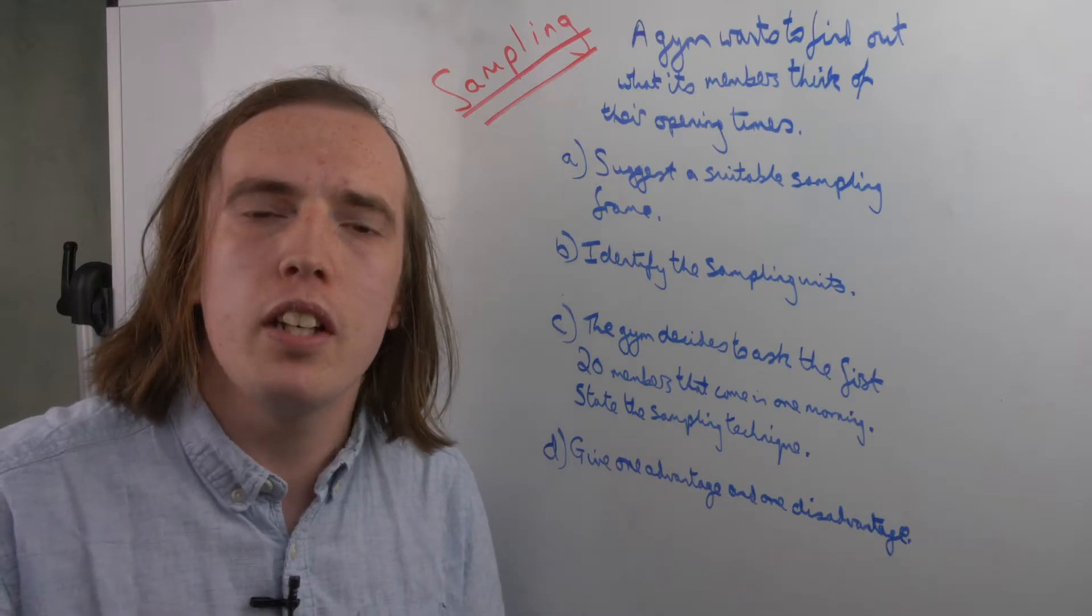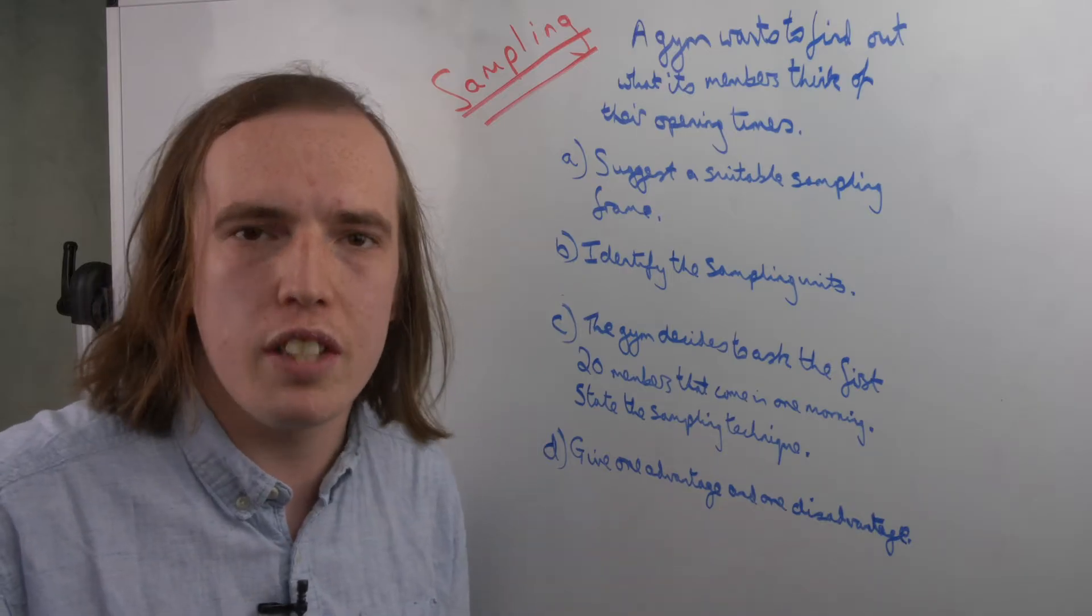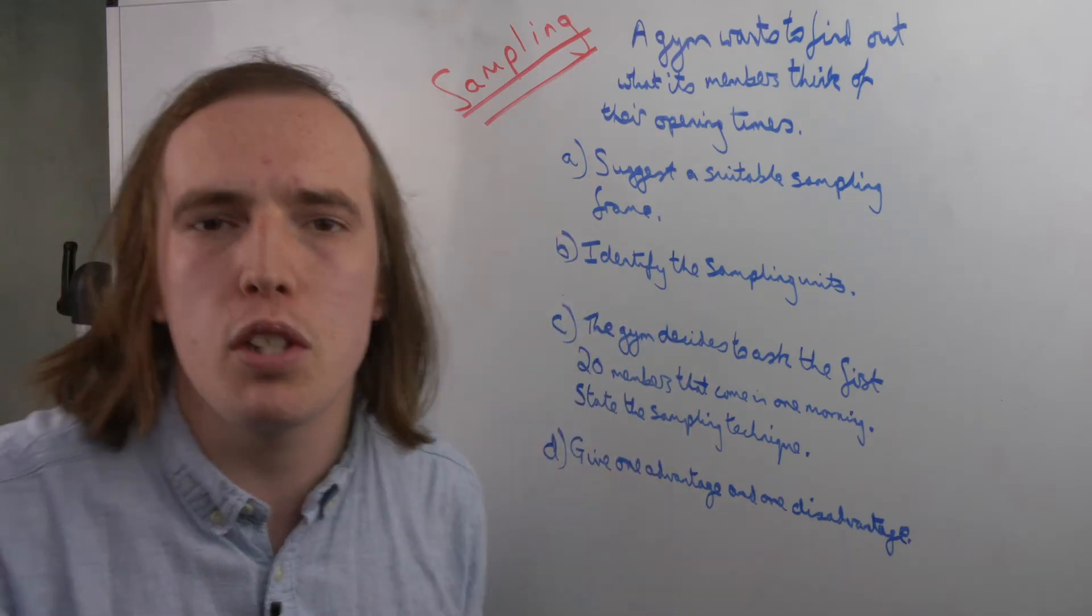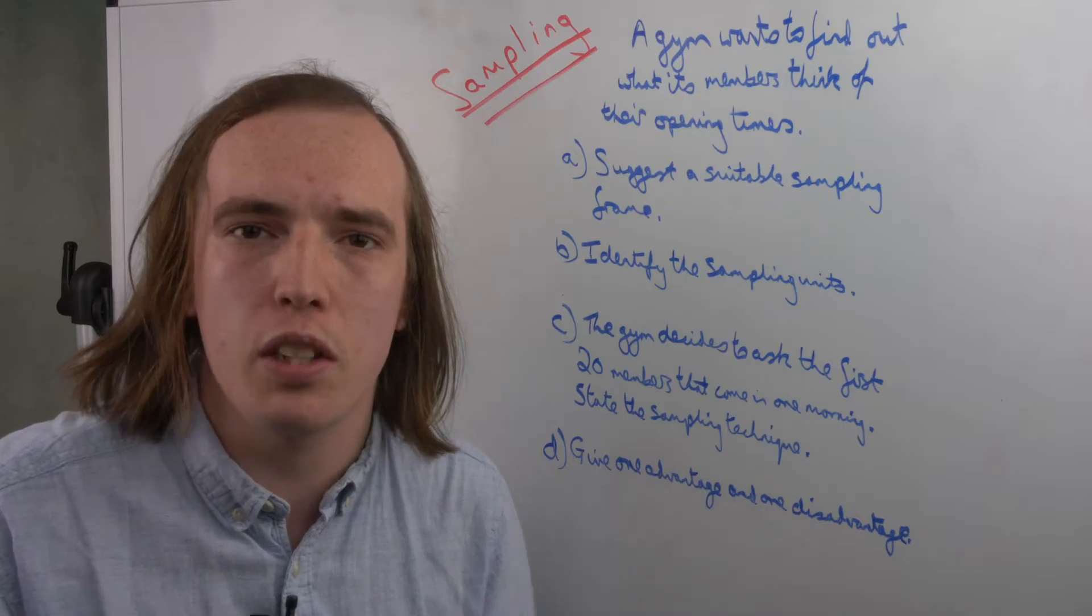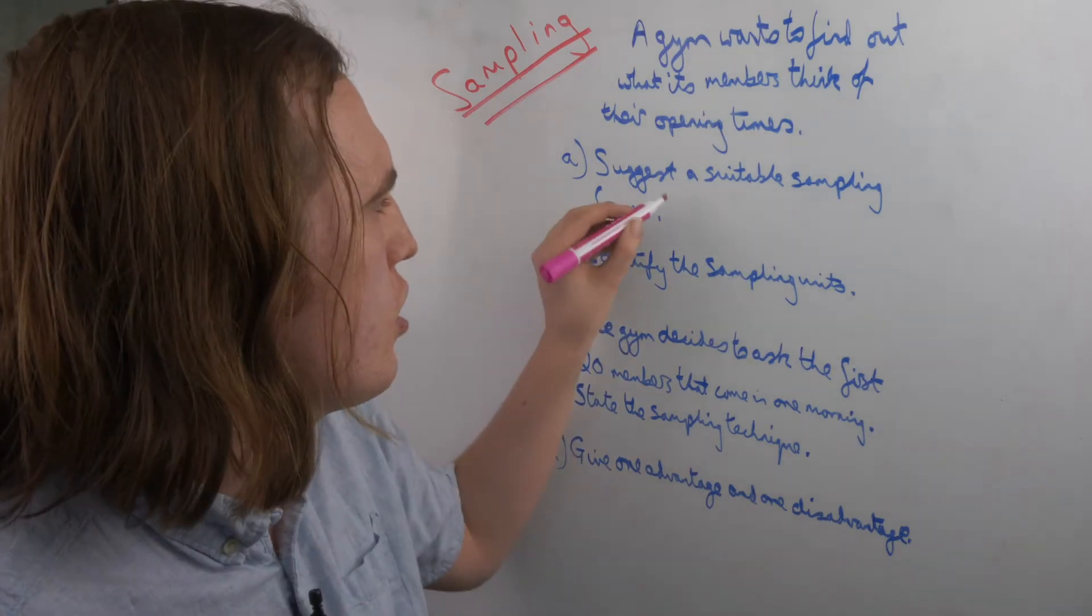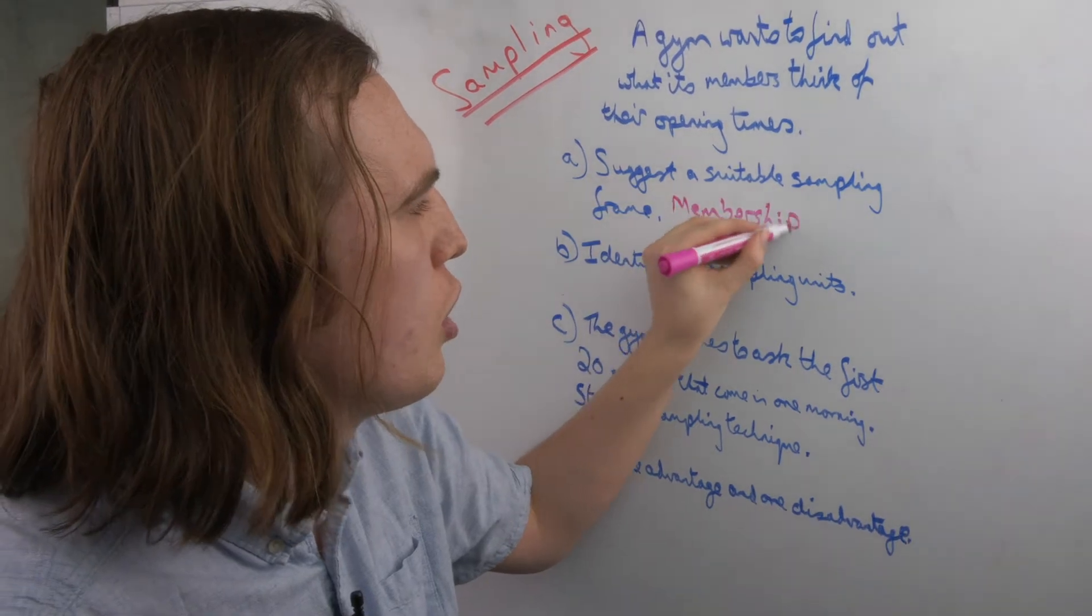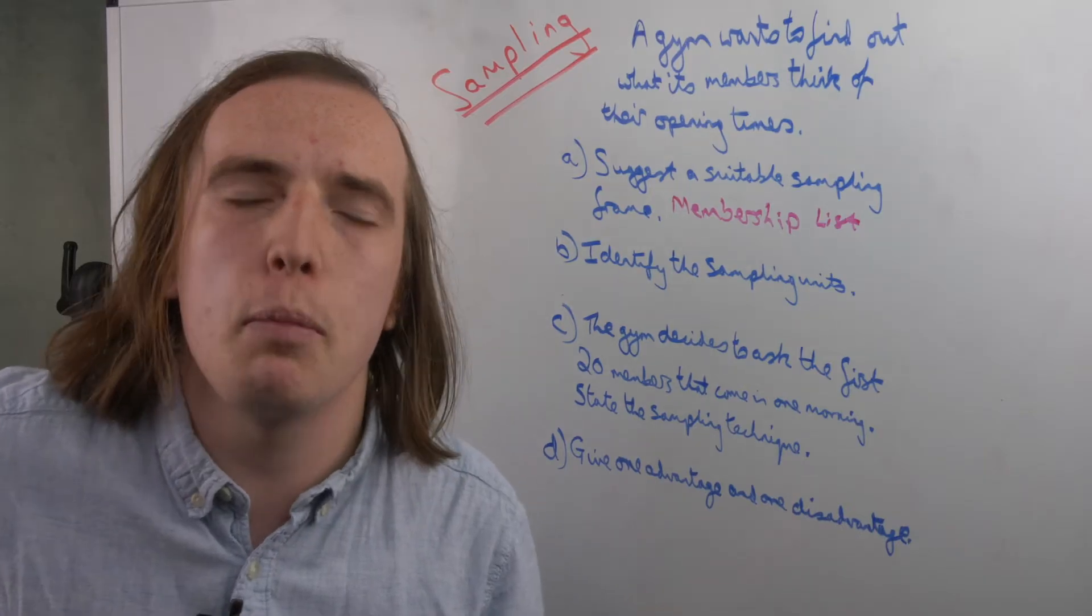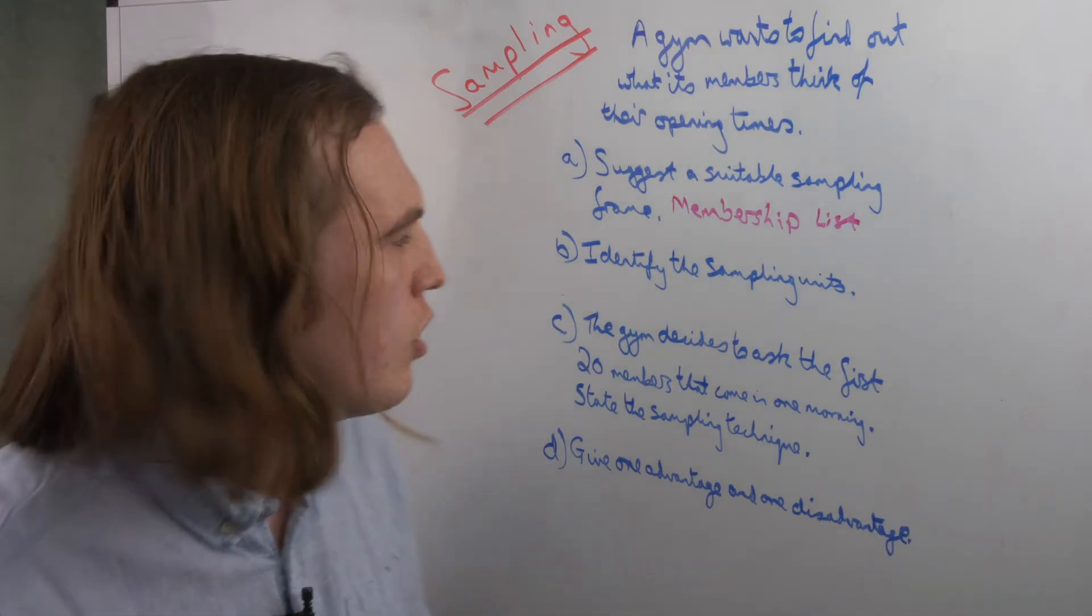Because they just want to ask their members, or find out what their members think, not just anyone who turns up to the gym. Because presumably only a select group of people are going to have bought the membership. We'll say the sampling frame is the membership list. So they will not just ask anyone. They're going to ask the people that they have the names of on this list, so they can guarantee that they are members.